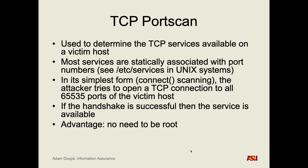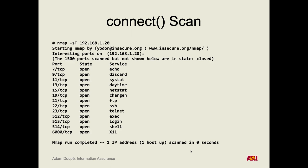More likely the target decides you're sketchy for doing that and blocks it, because you're sending a ton of traffic and keeping connections open. The disadvantage is it's very noisy. But you can easily do this in NMAP: nmap -ST does a connect scan, scanning ports 1 through 1500 and showing all the services. Does this exactly mean there is an X11 server running on port 6000?